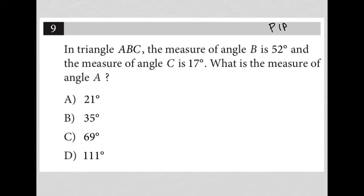So I'm going to draw a triangle ABC. I don't know exactly what it looks like, so I'm going to just draw a triangle like this and call this A and call this B and call this C. I'm being told that the measure of angle B is 52 degrees, so I'll label that as 52. And the measure of angle C is 17, so I'll label that as 17.